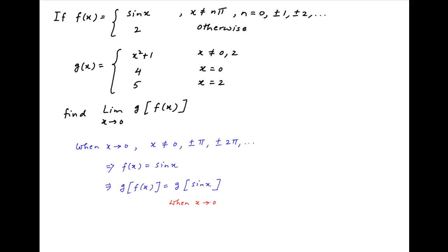Now, when x tends to 0, sin x is not equal to 0 because x is not equal to 0. Also, sin x is not equal to 2 because sin x is always less than or equal to 1.